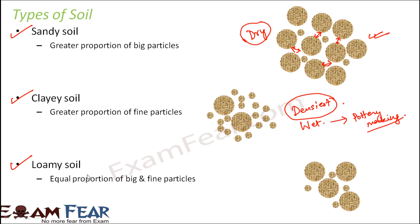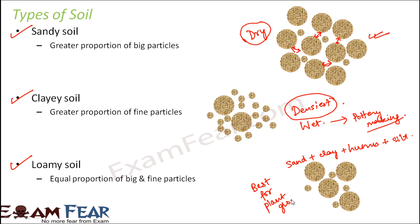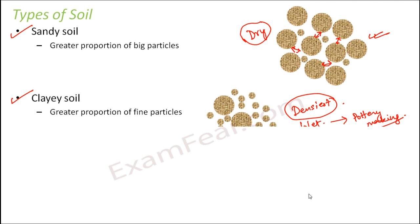Loamy soil is a mixture of sand, clay, humus, and silt. Humus improves the fertility of the soil. This soil contains the right amount of water and nutrients and is the best type of soil for plant growth. Most plants can grow on loamy soil, and if compost is added to it, it becomes even more ideal.